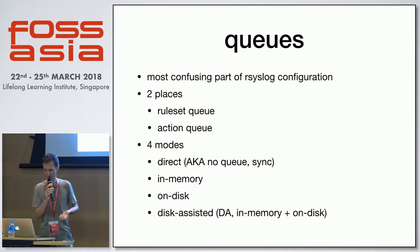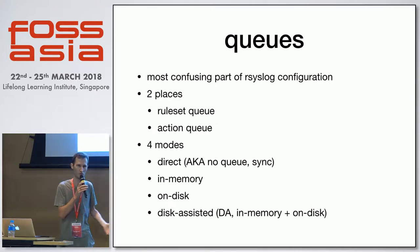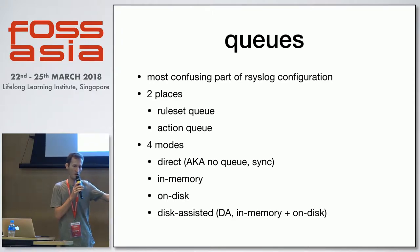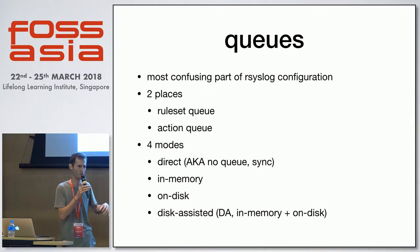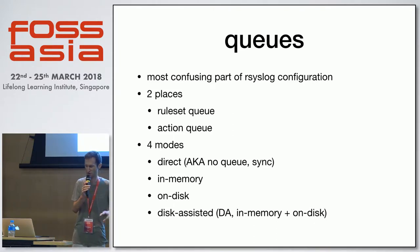For queues, there are in-memory and on-disk modes. I've never used on-disk queue because usually it's a good idea to use a memory queue — it's much faster. If your volume of messages is so large that you need persistence, then it's better to use the combined disk-assisted mode.